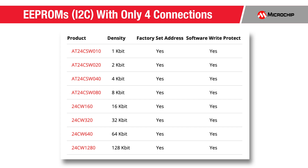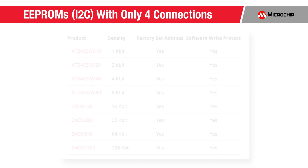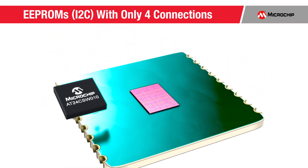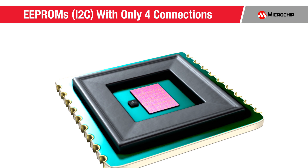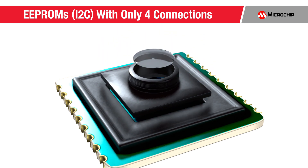Two different application groups worked with Microchip to create these products. One application is high pixel cameras in cell phones and security cameras. Here, the 4-pin part ships in a tiny wafer scale package not much bigger than the tip of a pen, storing details such as autofocus and image stabilization.